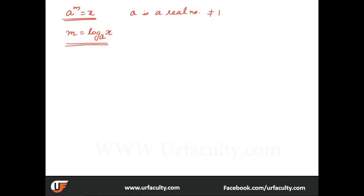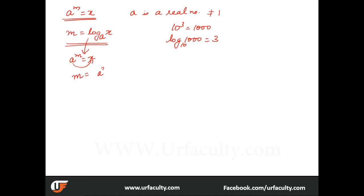For example, we know that 10 cubed is equal to 1000. In log form, log 1000 to the base 10 is equal to 3. To remember this, move everything in one cyclic direction: a to the power of m equals x becomes m equals log x to the base a — m comes first, a comes down as the base, x is the argument.